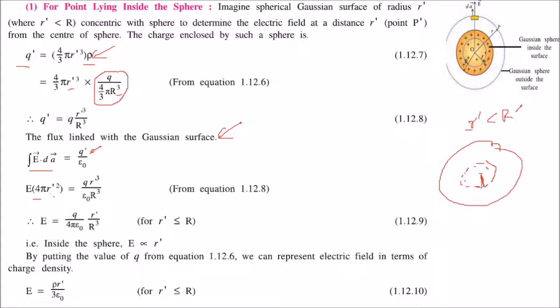E comes outside the integral, giving E × 4π(r')² = q'/ε₀. Replacing q' with the expression we found and solving for E, we get the electric field inside.